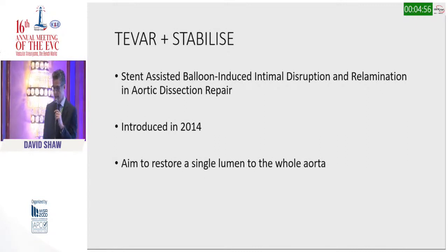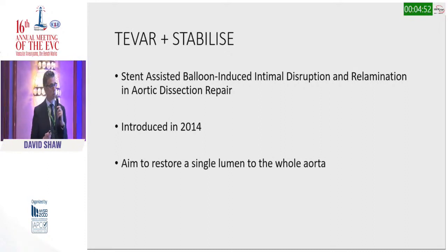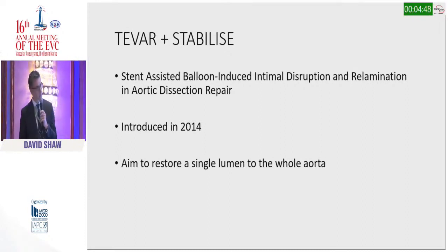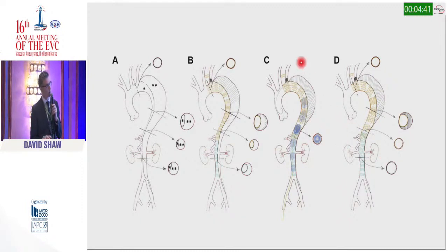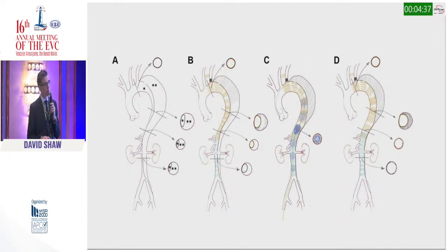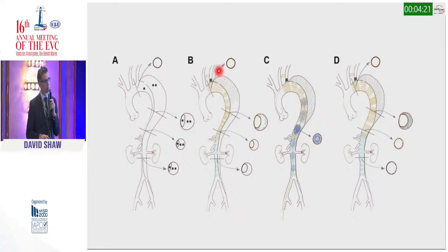The stabilize technique was introduced in 2014 and the aim is to restore the whole aorta to a single tube. The technique requires placing a full-length TEVAR from a safe proximal zone. We rarely have to cover the left subclavian artery and don't require a 20-millimeter zone. We look at the site of the primary entry tear and if we think we can achieve coverage without covering the left subclavian, we would do it. The TEVAR is then placed full length throughout the aorta to the celiac axis, and then a dissection stent is placed throughout the abdominal aorta as close to the aortic bifurcation as possible.